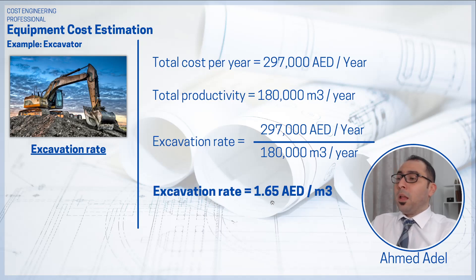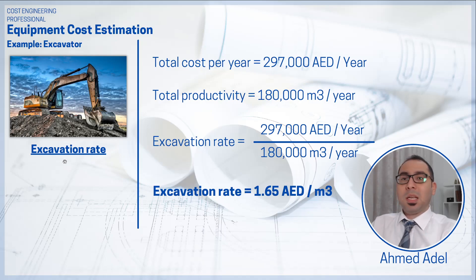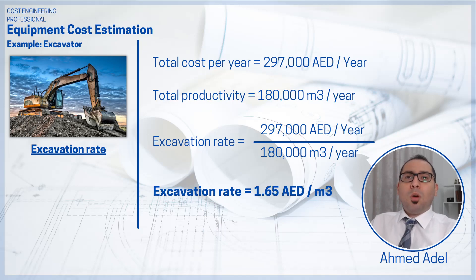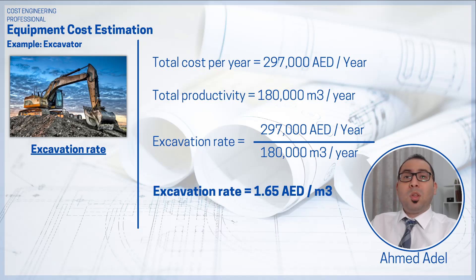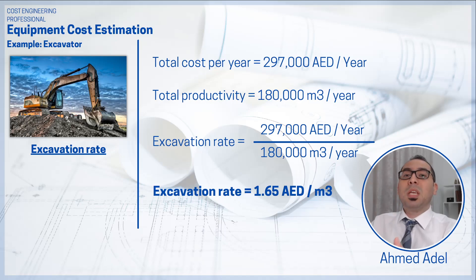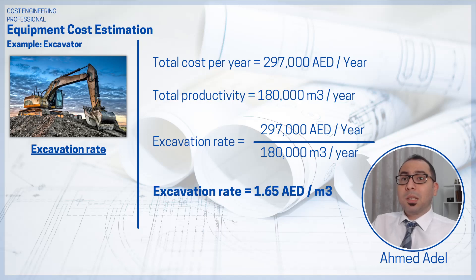If you're in Dubai, this number — around 1.65 dirhams per cubic meter — is familiar. In practice, excavation is typically awarded at 2 to 2.5 dirhams per cubic meter, which is the margin the excavation subcontractor earns. These calculations represent a subcontractor's perspective, because his excavator is working every day — 500 cubic meters daily — moving from one project to the next to keep the machine fully utilized.